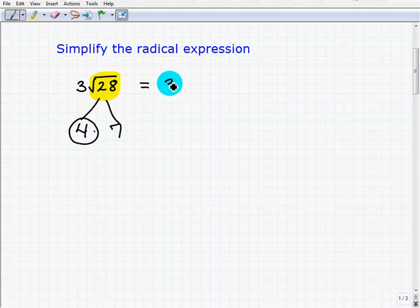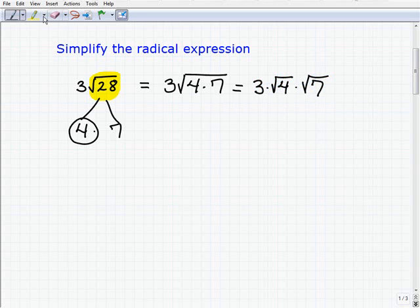So let's rewrite this expression like this. 3 times the square root of 4 times 7. So instead of 28, we're going to write this as 4 times 7. And that's nice because we can use one of those properties and write two individual radicals now. So this is going to be 3 times the square root of 4 times the square root of 7. And now I can get out that perfect square and take the square root of that particular number.